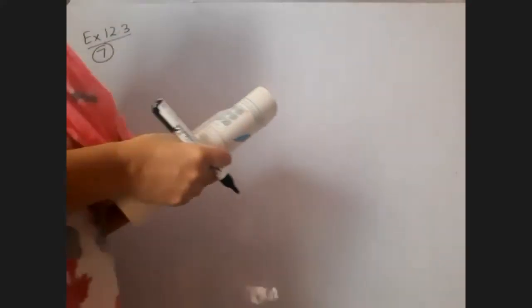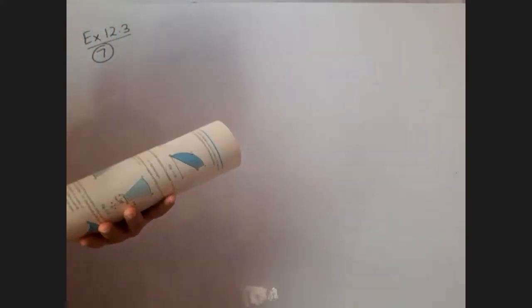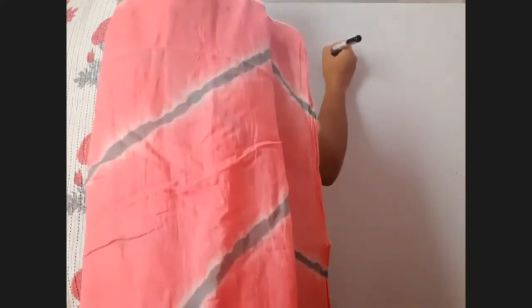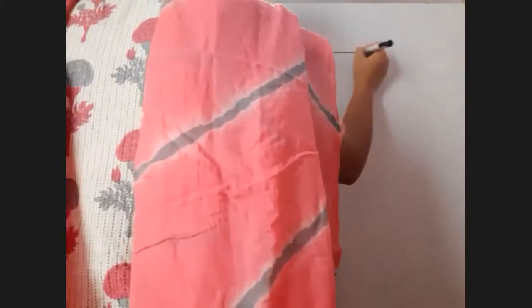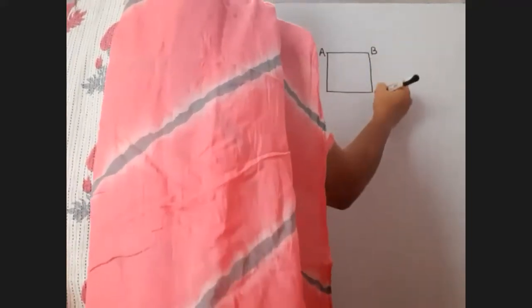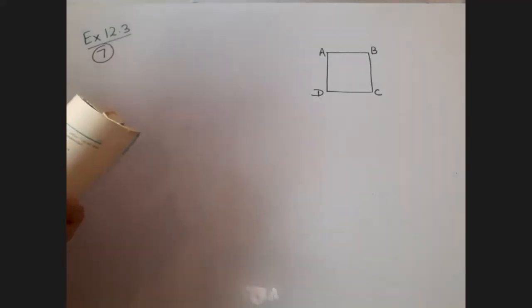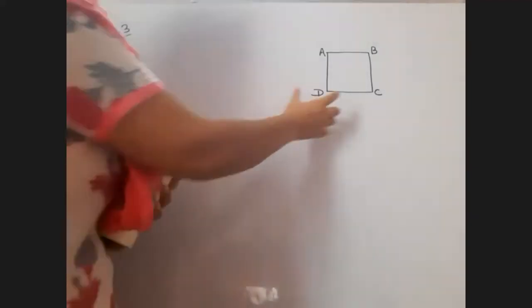We are given ABCD is a square of side 14 cm. So, let us first of all draw a square. So, we have a square here. ABCD. Now, the side of this square is 14 cm.